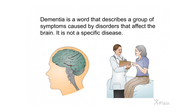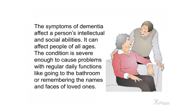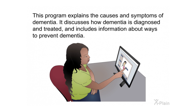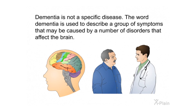Dementia is a word that describes a group of symptoms caused by disorders that affect the brain. It is not a specific disease. The symptoms of dementia affect a person's intellectual and social abilities and can affect people of all ages. The condition is severe enough to cause problems with regular daily functions like going to the bathroom or remembering the names and faces of loved ones.